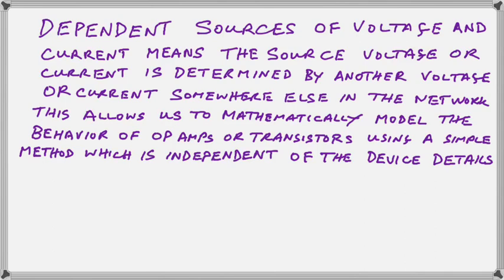A dependent source depends on some other voltage or current somewhere else in the diagram. This allows us to mathematically model the behavior of operational amplifiers or transistors using a standard and simple method that's independent of the particular device.